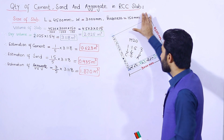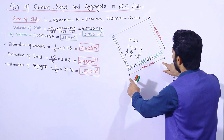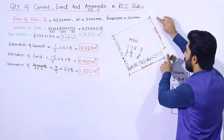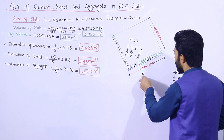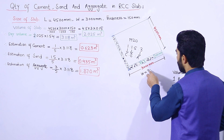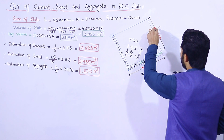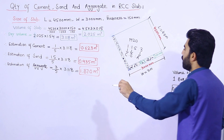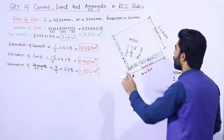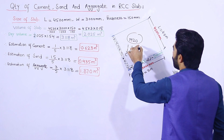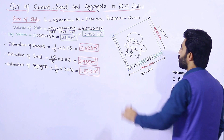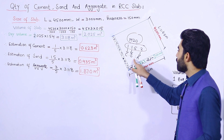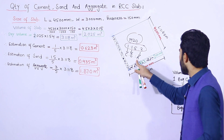As you can see in the diagram, the width of the slab is 3000 mm and the length is 4500 mm — or width is 3 meters and length is 4.5 meters. We will calculate the estimation of cement, sand, and aggregate in M20 grade concrete, where the ratio is 1:1.5:3 — one part cement, 1.5 parts sand, and three parts aggregate.